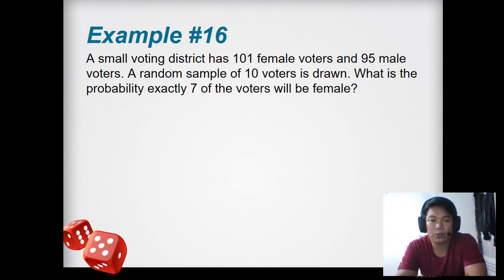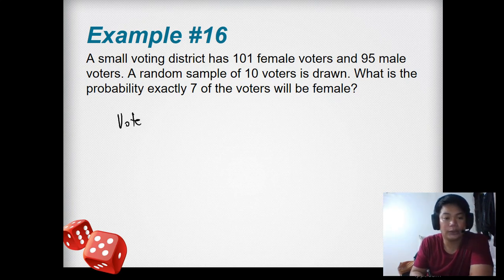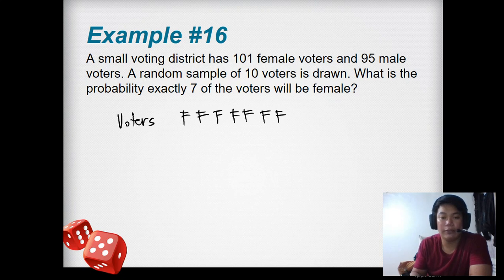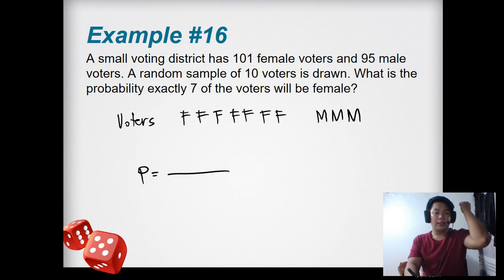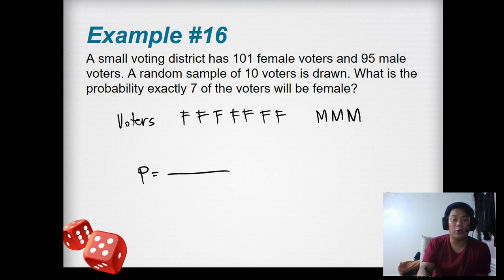Next: A small voting district has 101 female voters and 95 male voters. A random sample of 10 voters is drawn. What is the probability exactly 7 voters will be female? We have 7 female (F, F, F, F, F, F, F) and if 10 voters total, we have 3 male. How do we use hypergeometric? Probability: total first. We're selecting 10 voters, but the total is 101 plus 95 or 196, so 196C10.